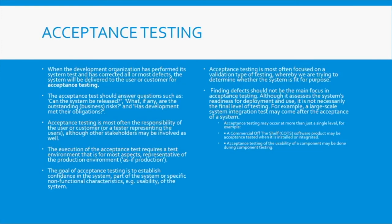Acceptance testing is performed at the system level, but it is performed by the user or a representative of the user. The key questions being answered are: can the system be released? If there are outstanding risks or bugs, can we still go live? Does the development meet its obligations? Stakeholders or customer representatives are answering these questions. At this point, you are not testing for bugs or defects — you are testing to confirm that the application meets requirements and whether you can go live.